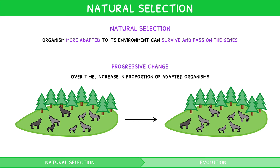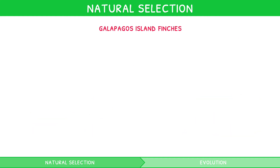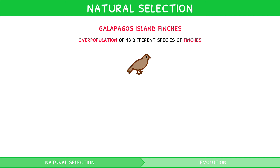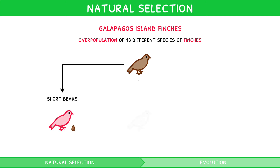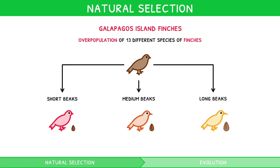The key example that the IB expects you to use to explain natural selection is Peter and Rosemary Grant's observations on the Galapagos Island finches. In 1835, Charles Darwin observed overpopulation of 13 different species of finches, with variation in beak size and shape. Peter and Rosemary Grant further linked this variation to adaptations in feeding: short beaks favoured smaller seeds, medium beaks favoured moderately sized seeds, and longer beaks favoured larger seeds.